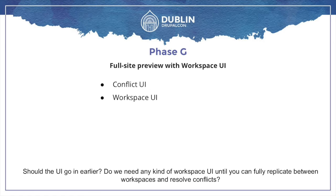Phase G is the final phase — polishing all the UIs and making sure there's a really nice way to replicate content between workspaces, to create workspaces, to manage all moderation states on them, and a full conflict UI. Maybe you just want to pick which of the conflicting revisions to keep, or maybe you want to carry out a full merge yourself with a traditional four-pane view. We're thinking of a very flexible conflict UI with different plugins for different ways to handle conflicts.